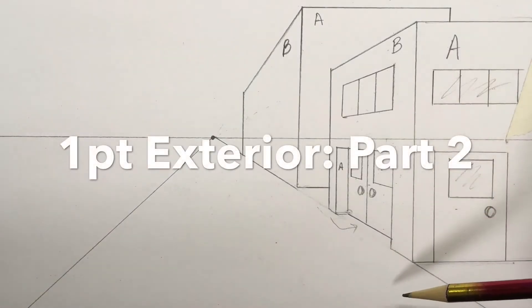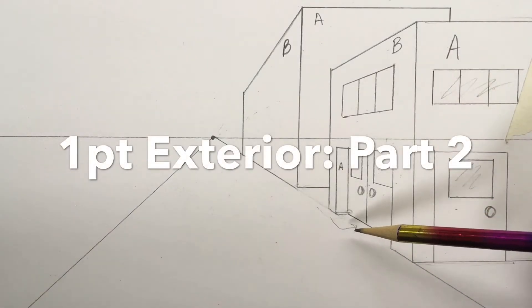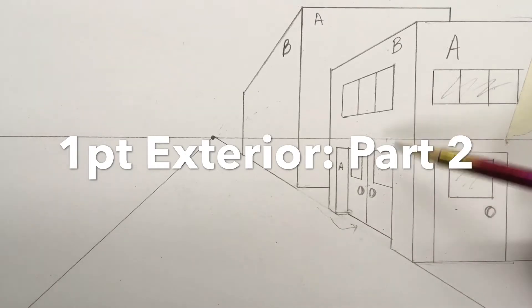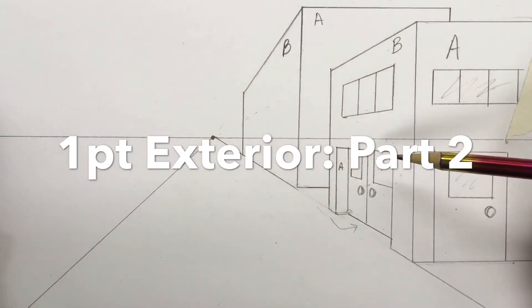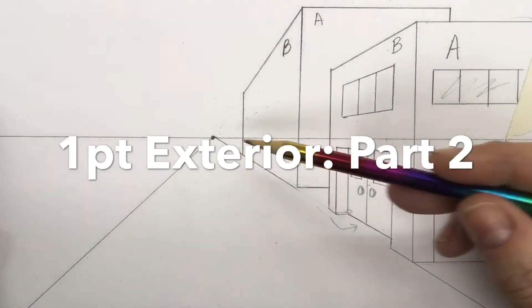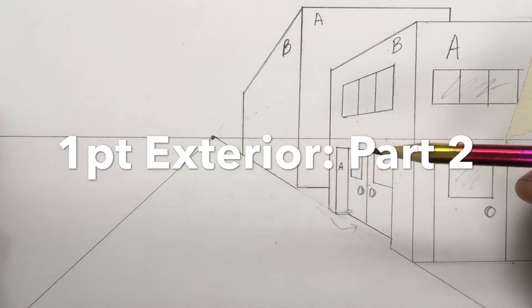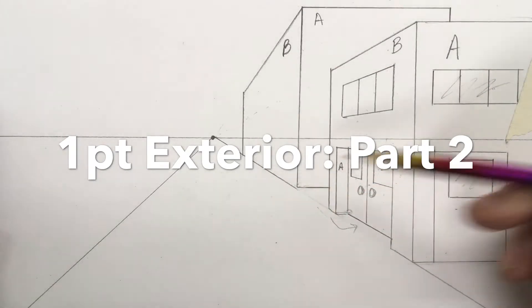Welcome back for part two of the exterior one-point perspective. So we have doors and windows that we've drawn in the A side facing us and the B side stretching away or shrinking, and if we exit this door we're going to get run over.